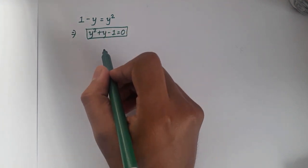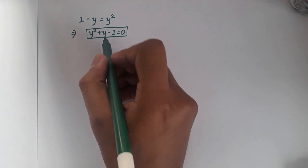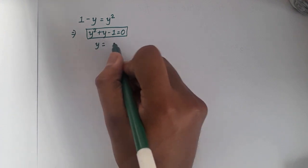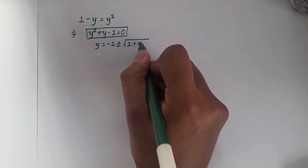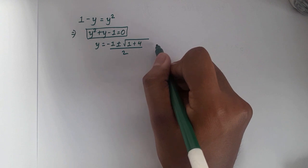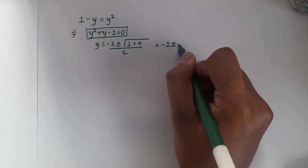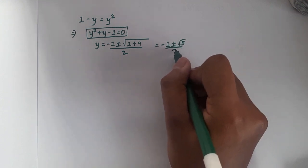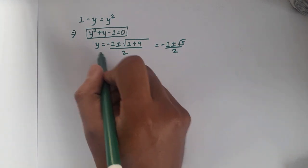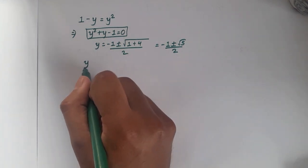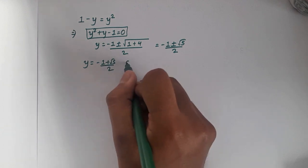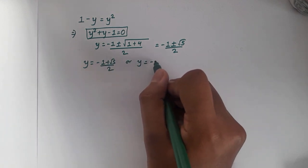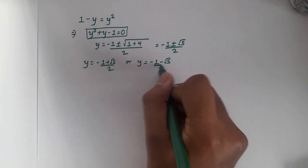So we can use the quadratic formula to calculate the value of y. y will be equal to minus b plus or minus under root b squared minus 4ac, over 2a. This gives us minus 1 plus or minus root 5 over 2. So there are two possible values for y: y equals minus 1 plus root 5 over 2, or y equals minus 1 minus root 5 over 2.